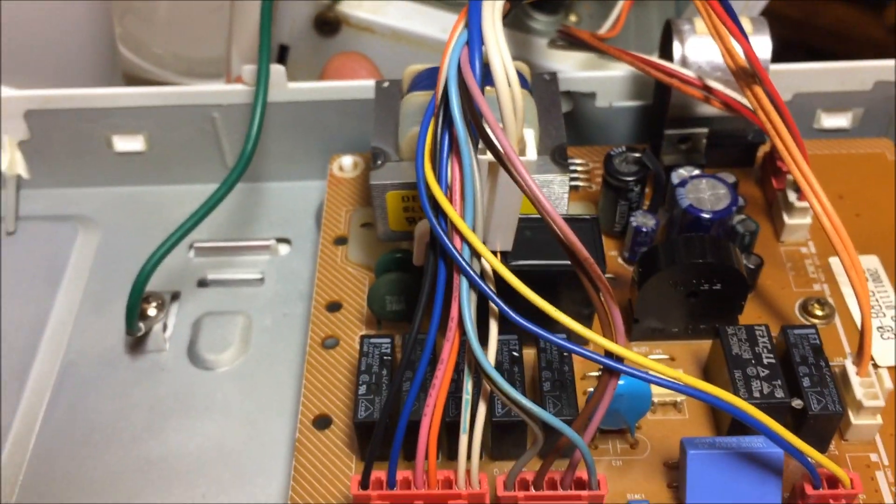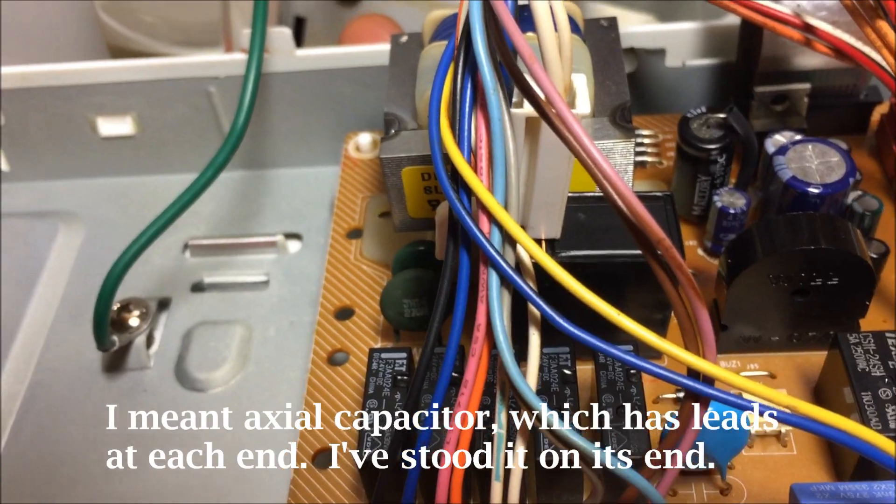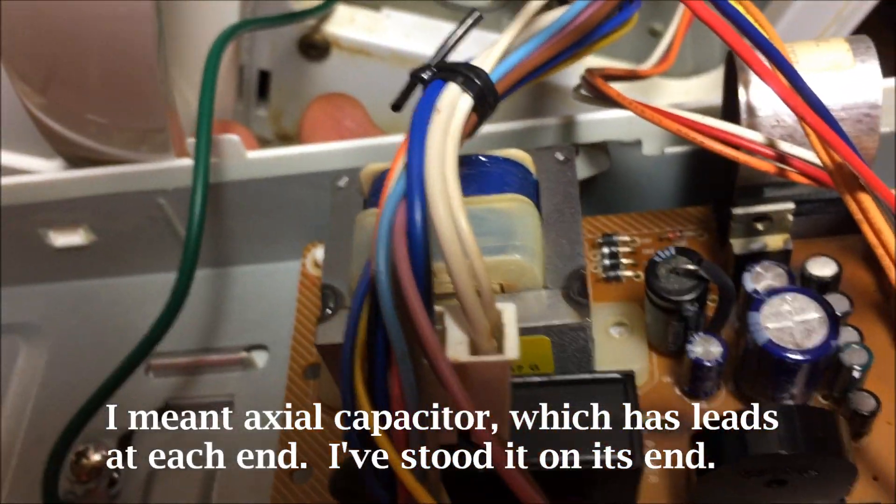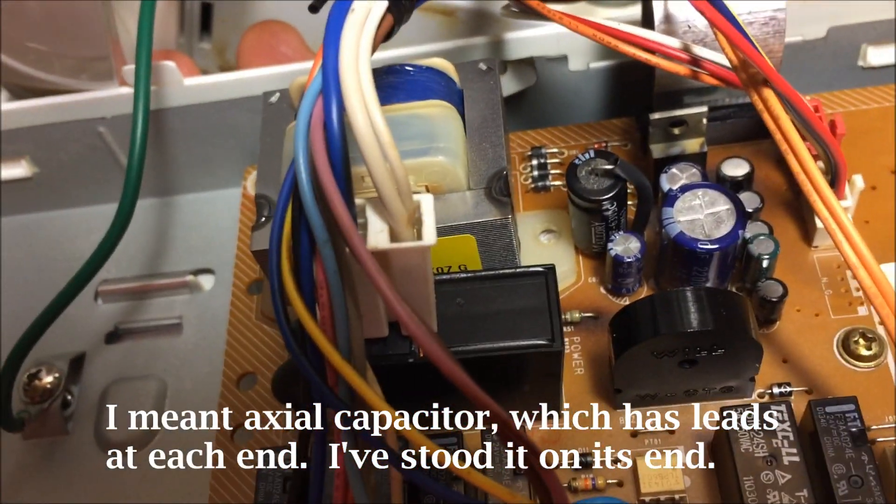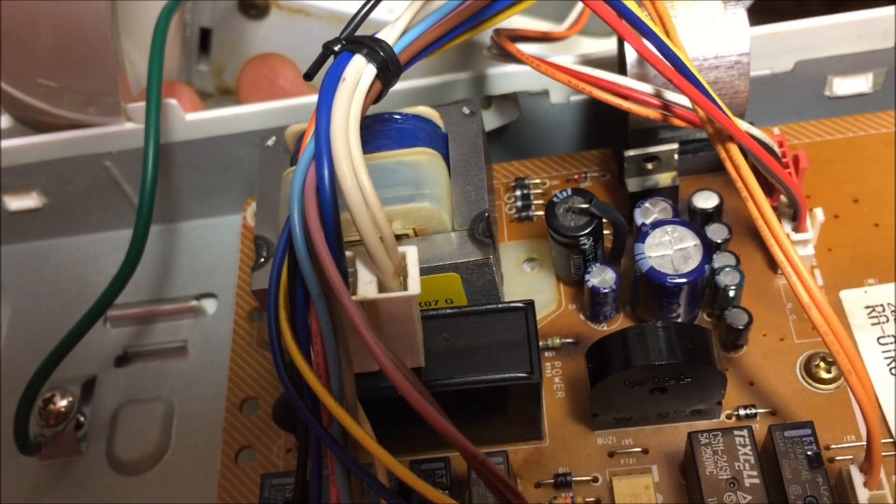There, that radial capacitor is what I used to replace it right there with the heat shrink on the top. I put it in vertical because I didn't have access to the regular can.